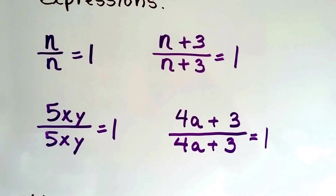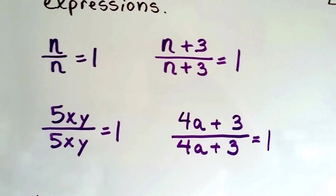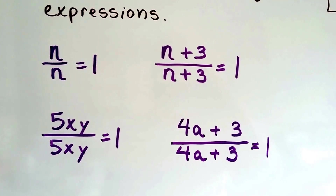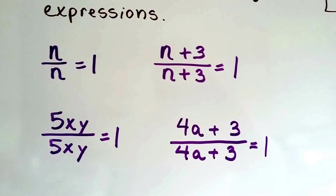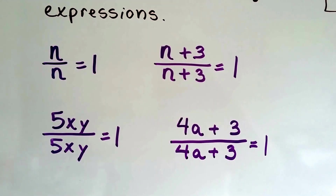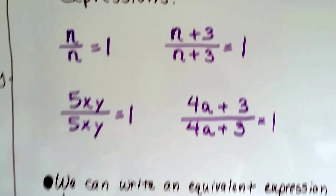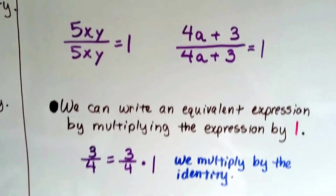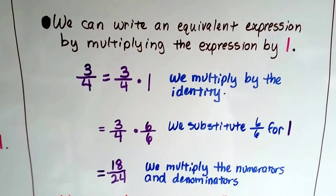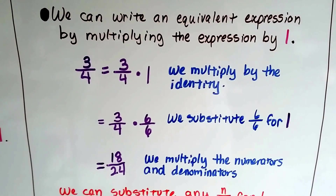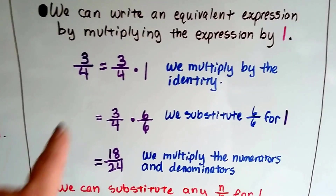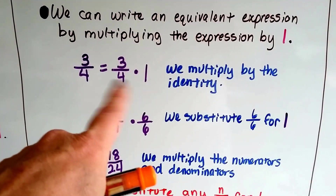If we have 5xy over 5xy, that's going to equal 1 — the numerator and denominator are the same. Even if we had 4a plus 3 over 4a plus 3, it's got the same numerator as denominator, so it's going to equal 1. And we can write an equivalent expression by multiplying the expression by 1. If we have 3/4ths, it's going to equal 3/4ths times 1, because multiplying by the identity just makes it equal itself.